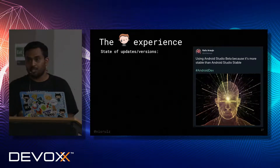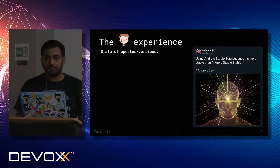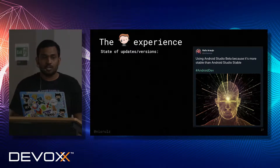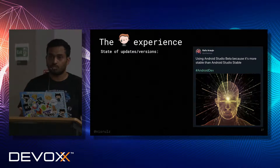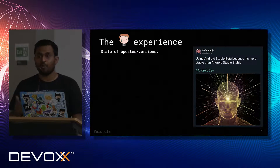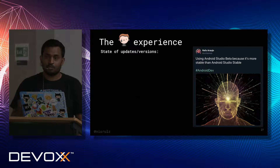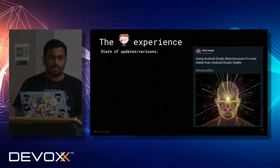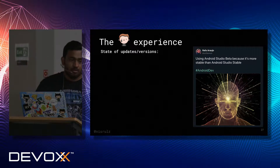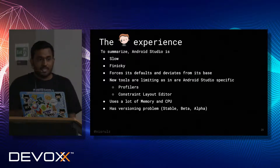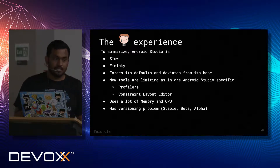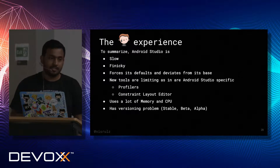The state of updates and versions: you have alpha, beta, canary, and stable versions. People are not sure which version to use anymore. If you're on stable, you know how buggy it is. So you switch to beta expecting stability, but beta is also not stable. So you switch to canary, which is completely broken. To summarize everything: Android Studio is super slow, finicky, forces defaults, limits new tools to its environment, uses lots of memory and CPU, and has versioning problems.